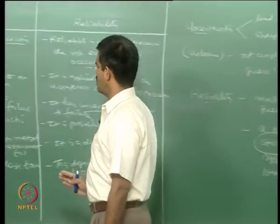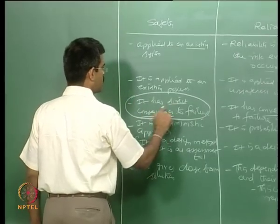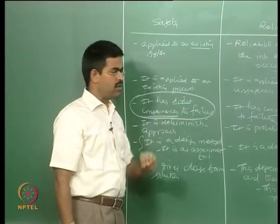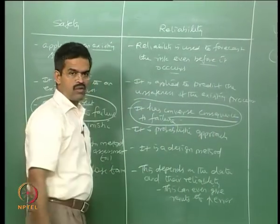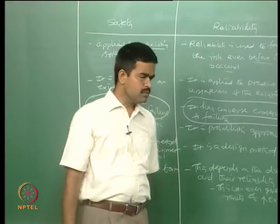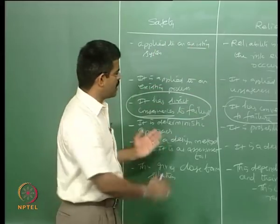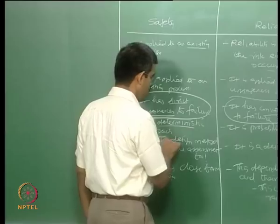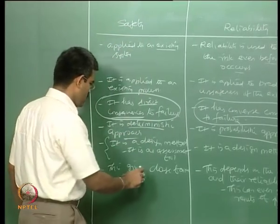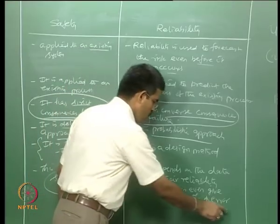The most important difference among all these is that safety indicates direct consequences of failure — if the system is unsafe, it has direct consequence of failure — whereas reliability has converse consequences of failure, because reliability is one minus probability of failure. This is a very important difference between safety and reliability. Safety examines a given existing system, and solutions can be more or less accurate. If tools are not properly used in reliability, it can give results of very high error as well.